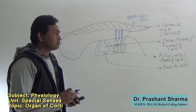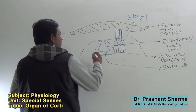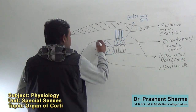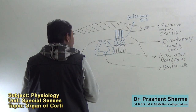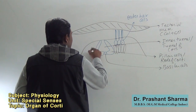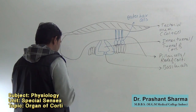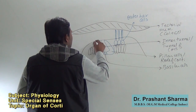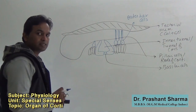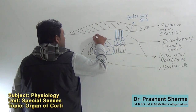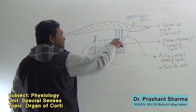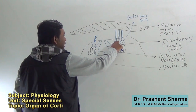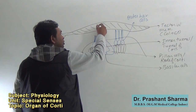Inner to the inner tunnel or the pillar cells, inner phalangeal cells are present, and inner hair cells rest over the inner phalangeal cells. Inner hair cells are shorter or smaller than the outer hair cells, and also the cilia or stereocilia do not reach the tectorial membrane.